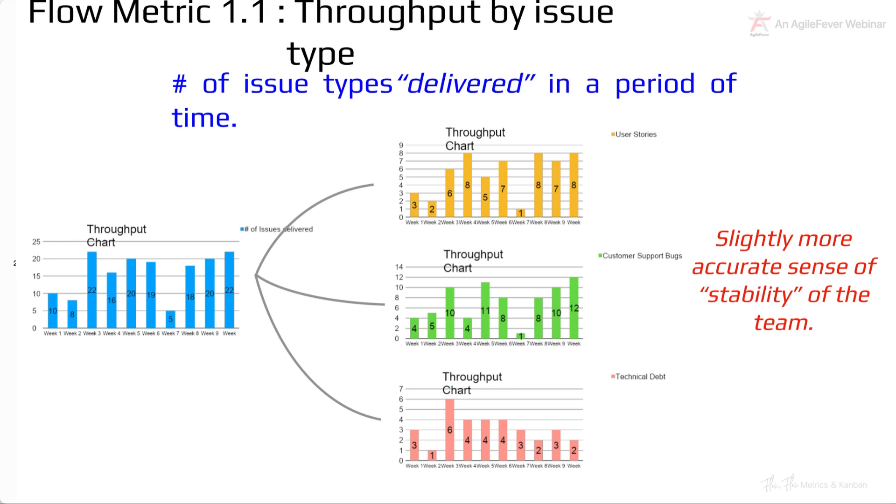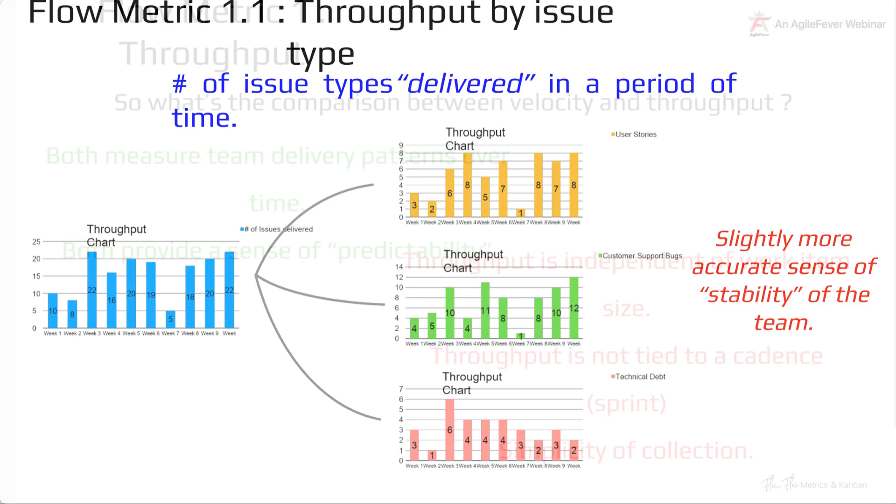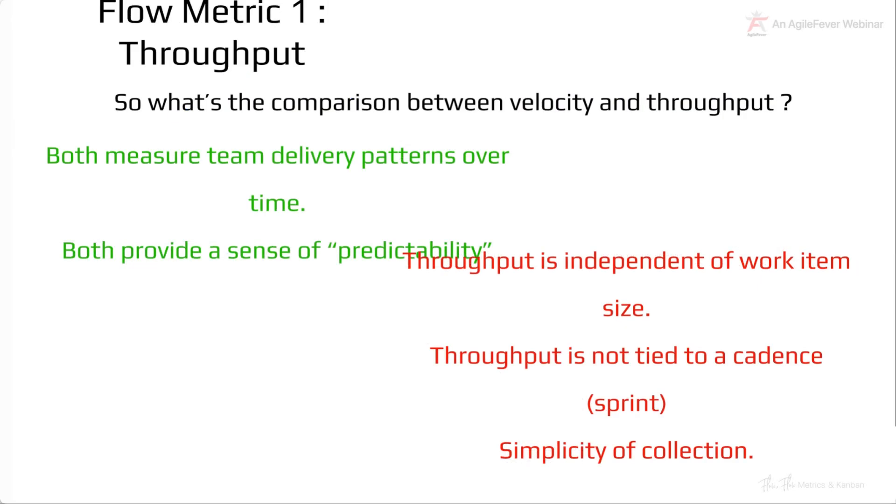So now that we have established throughput by issue type, let's go one level deeper. Now let's compare. How different is throughput from velocity? This question comes up quite frequently and I want to make sure that we understand this correctly.